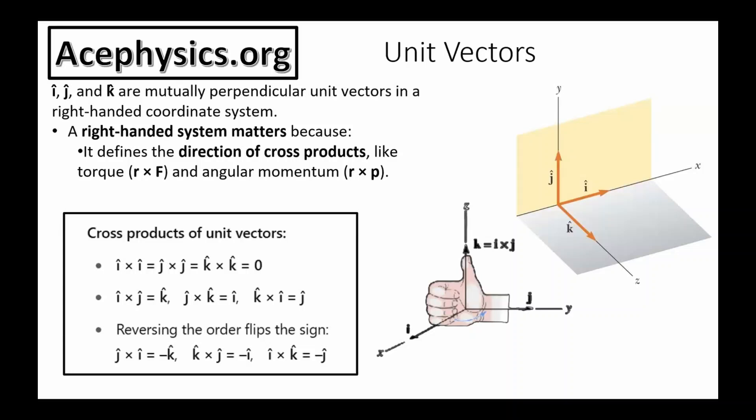To understand angular momentum, you need to know about the cross product. You've seen it before with torque, which is r cross F. Angular momentum is defined in a similar way: r cross p. In general, angular quantities are linear quantities multiplied by a distance from the axis.